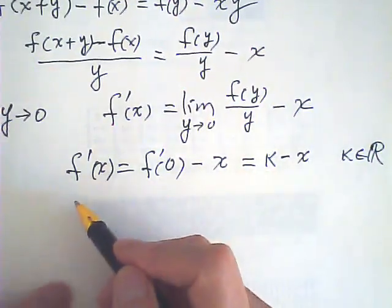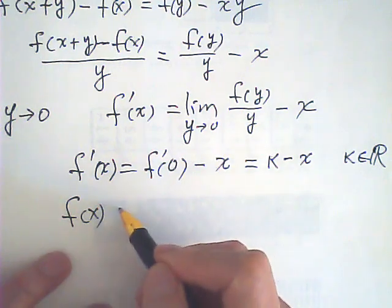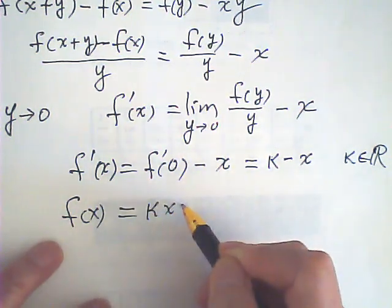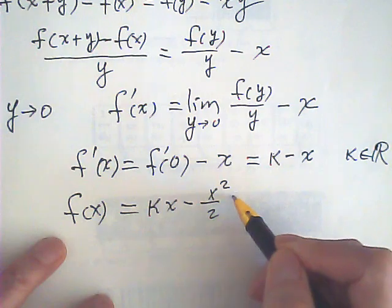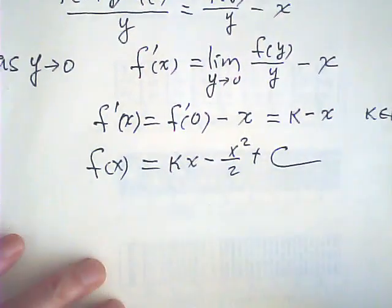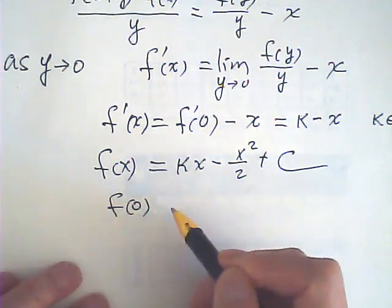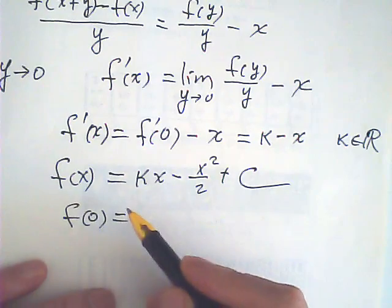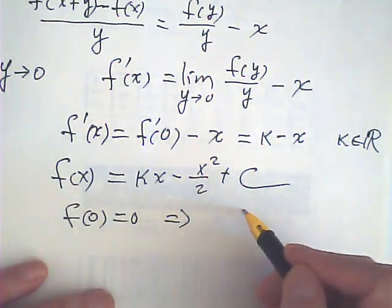Then, it's very easy to find f of x. If I integrate both sides with respect to x, that is, Kx minus half x squared plus C. And, since f of zero is zero, which means that C is equal to zero.